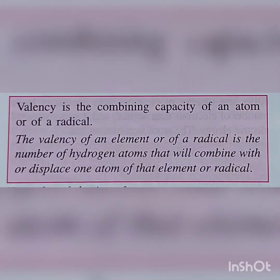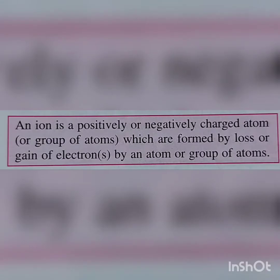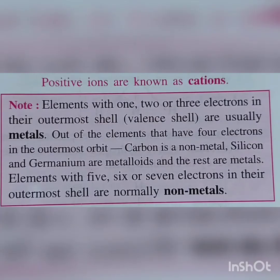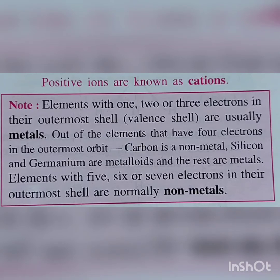Valency. Once you know the symbols of elements, it is important to understand valency. The valency of an element is the measure of its combining power with other elements. Another important definition is an ion. An ion is a positively or negatively charged atom or a group of atoms, formed by the loss or gain of electrons by an atom or group of atoms. For example, sodium loses one electron to form a sodium ion — a sodium cation. Magnesium loses two electrons to form Mg with a valency of 2+.